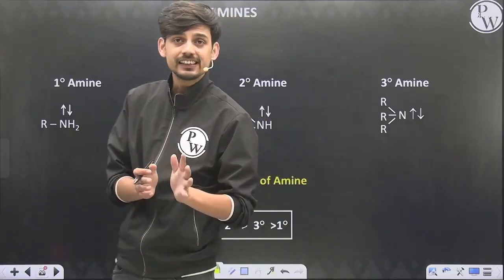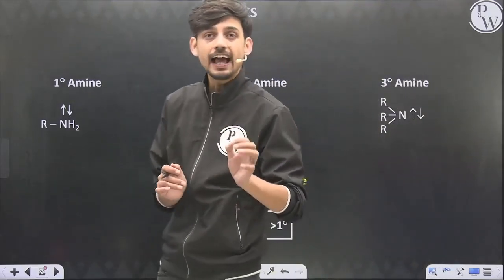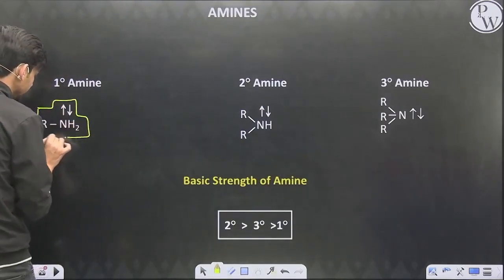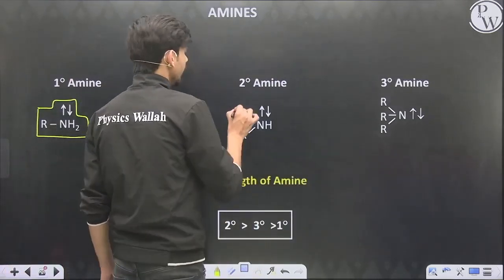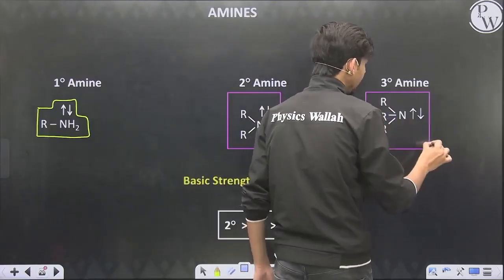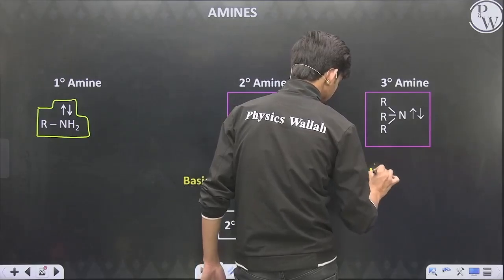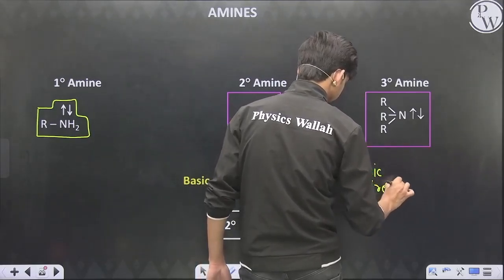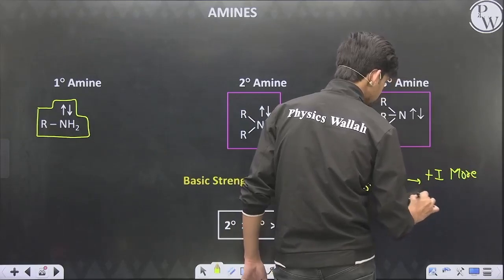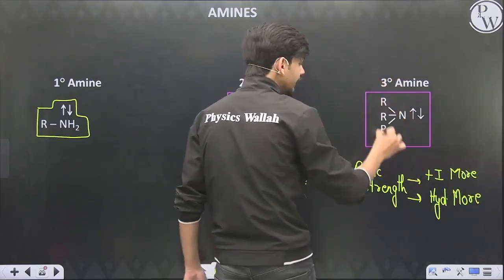Now let's move to amines. Amines are classified on the basis of the degree of nitrogen — the number of carbon chains attached to the nitrogen atom. When nitrogen has one carbon chain, this is known as a primary amine (has –NH2 group). Nitrogen having two carbon chains is a secondary amine. Nitrogen having three carbon chains is a tertiary amine.